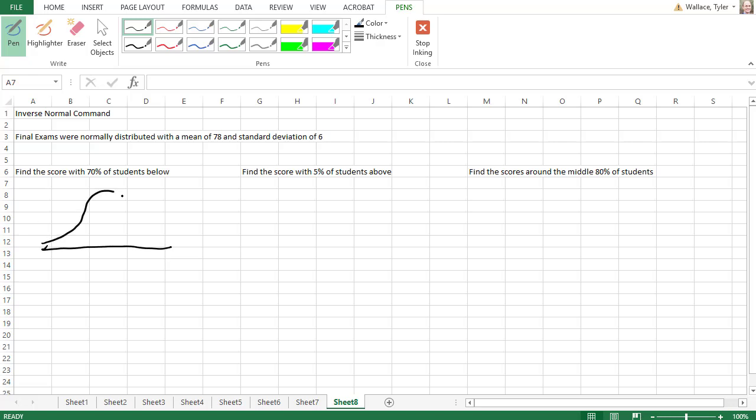So if we were to draw a picture of this situation, the mean in the middle is 78, and we want to put an area or a probability of 0.7, that's more than half, below that x value. So there's 0.70 area off to the left.